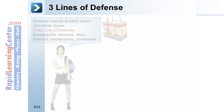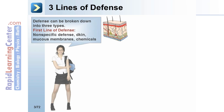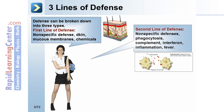Three lines of defense. Defense can be broken down into three types. The first line of defense is nonspecific defense — that's the skin, mucous membranes, and chemicals. The second line of defense is also nonspecific defenses, like phagocytosis, complement, interferon, inflammation, and fever.